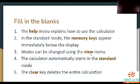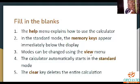Okay. Fifth one: the clear key deletes the entire calculation. The clear key deletes the entire calculation. Whereas the CE key deletes the last typed number alone. So the clear key deletes the entire calculation. Page number 47. C, L, E, A, R — clear. In short form, you can write this as C.